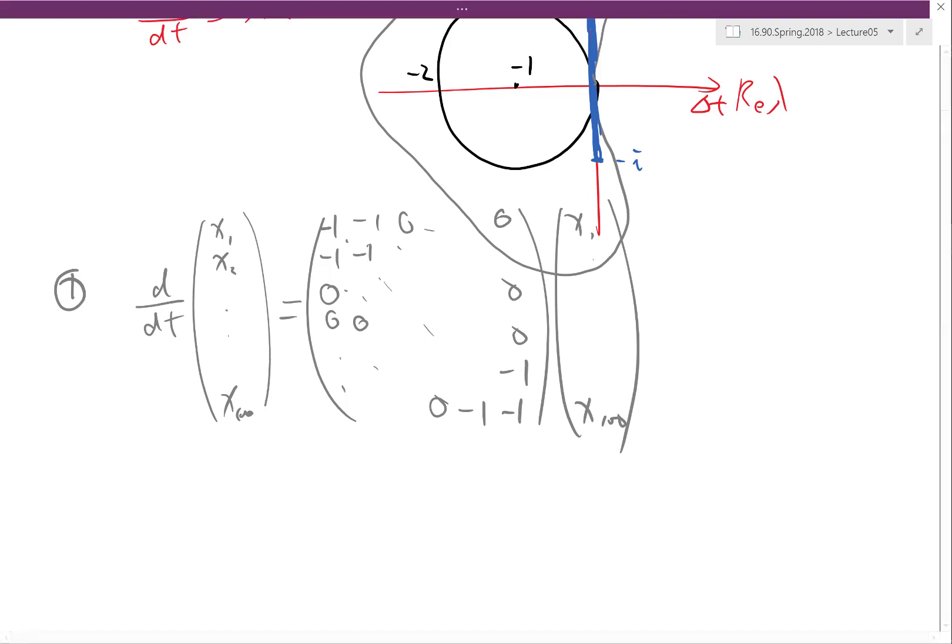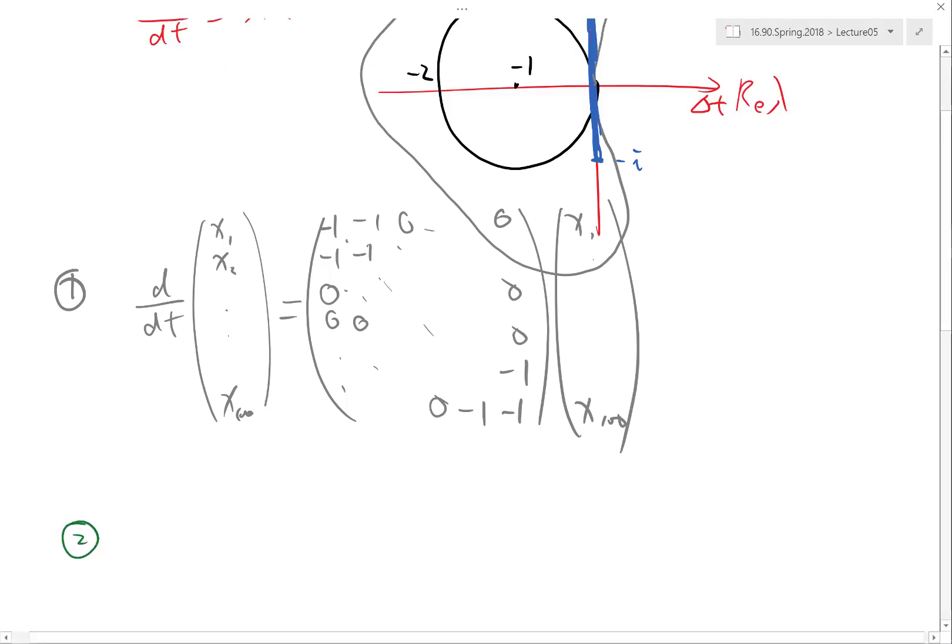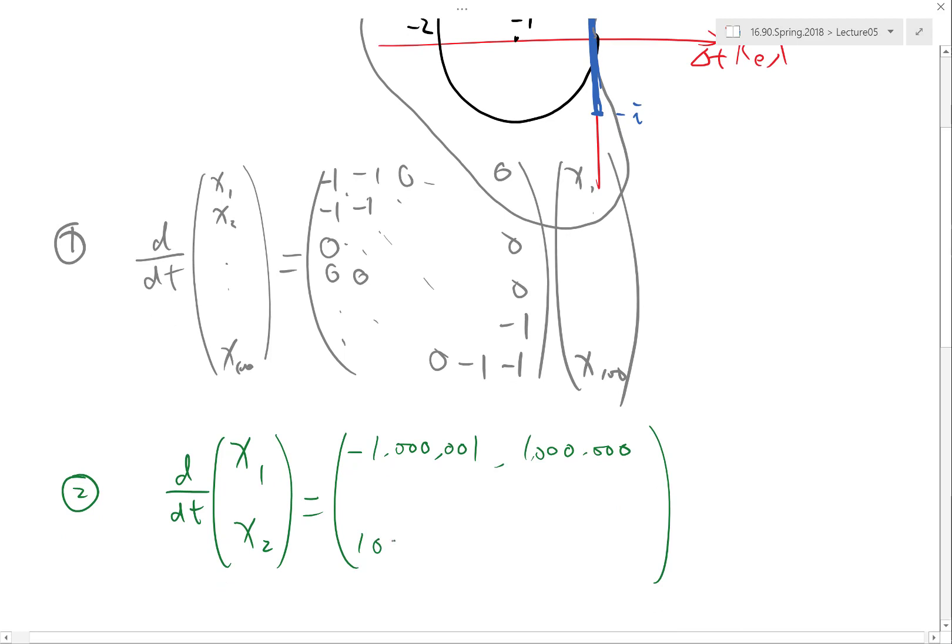The second system involves only two ODEs, X₁ and X₂. The equation is: d/dt [X₁, X₂] equals the matrix [minus a million and 1, plus a million with no ones; plus a million with no ones, minus a million and 1] times [X₁, X₂]. So one system is like the top, one system is down here.